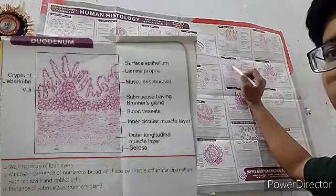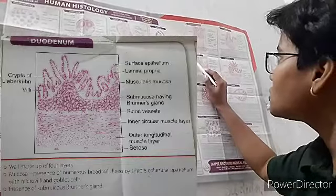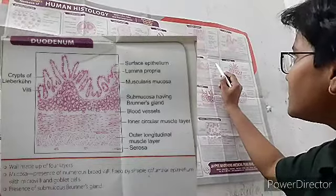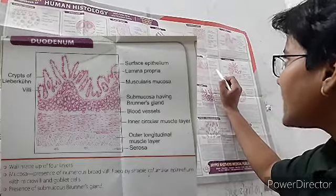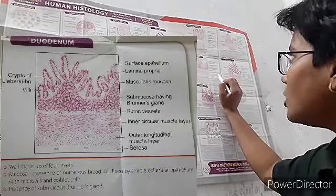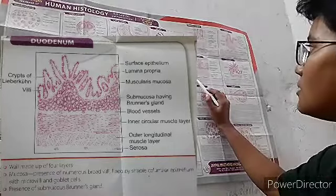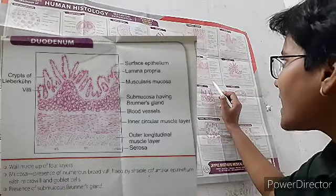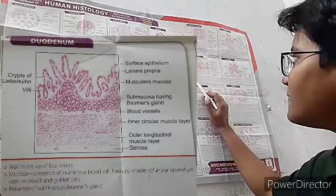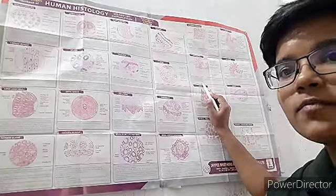Now the duodenum. Visible structures include crypts of Lieberkühn, villi, surface epithelium, lamina propria, muscularis mucosae, submucosa with Brunner's glands, blood vessels, inner circular and outer longitudinal muscle layers, and serosa. The wall is made up of four layers. The mucosa has numerous broad villi lined by simple columnar epithelium with microvilli and goblet cells. A key feature is the presence of submucosal Brunner's glands.